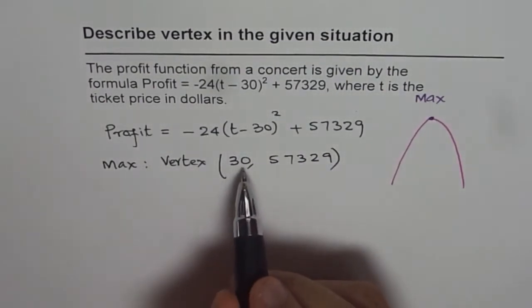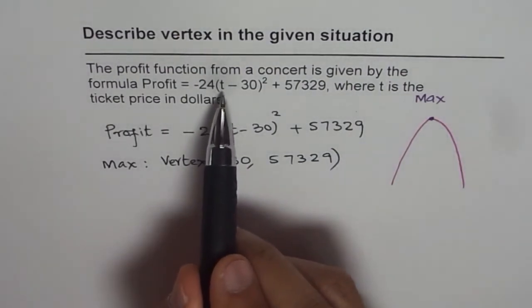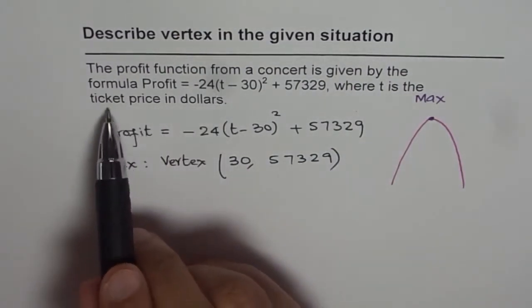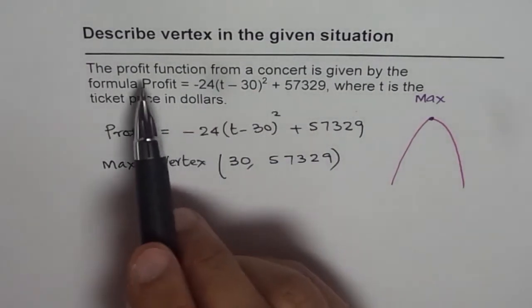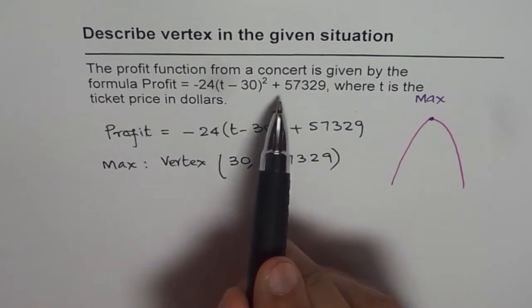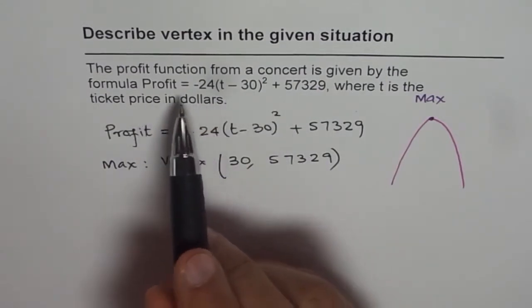Now what is 30? 30 is the value of t, right? It is the ticket price in dollars, and the profit function is in dollars.